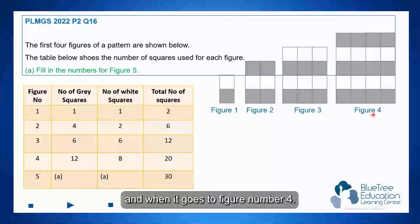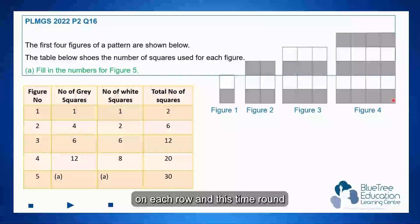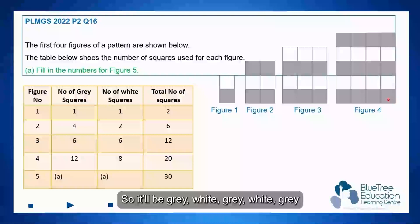For figure 3, the number of squares has increased to match the figure number, so there are 3 on each row, going grey, white, grey, white. And when it goes to figure number 4, there will be 4 on each row, and this time round there will be 5 rows, going grey, white, grey, white, grey.